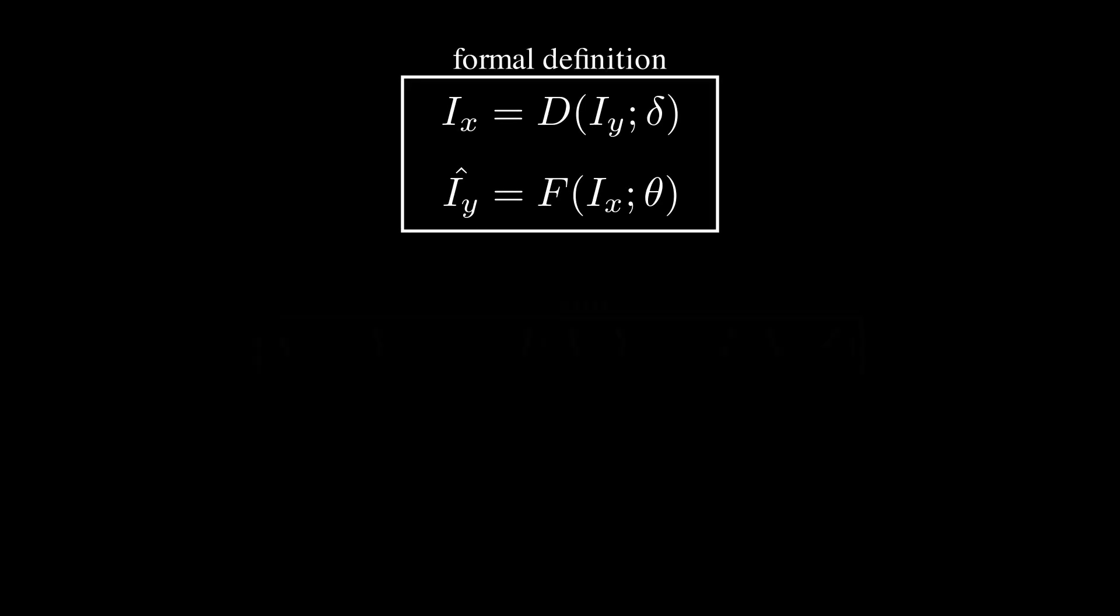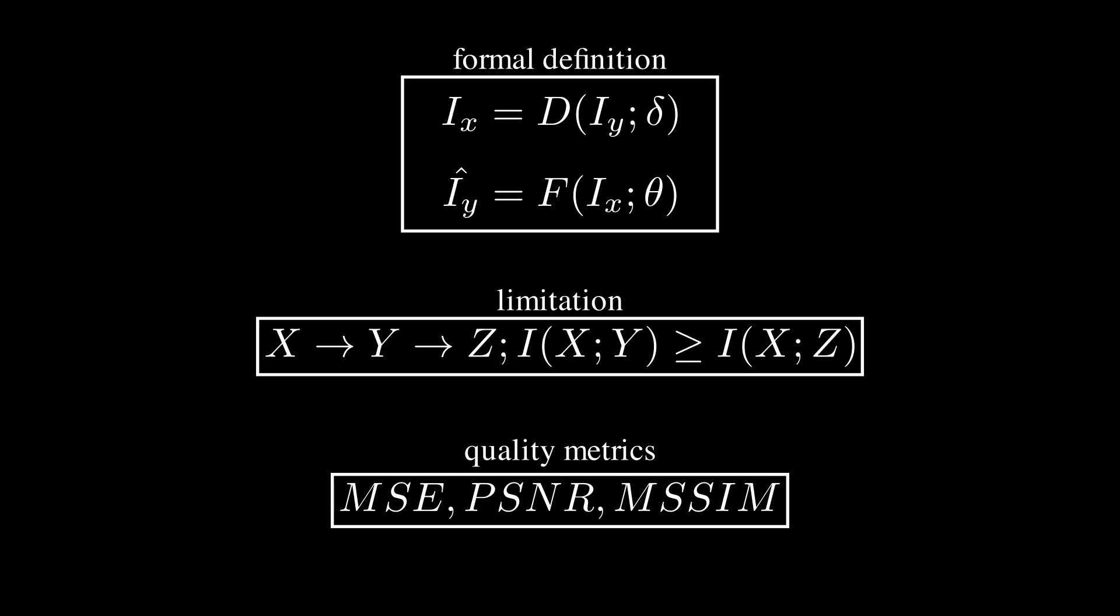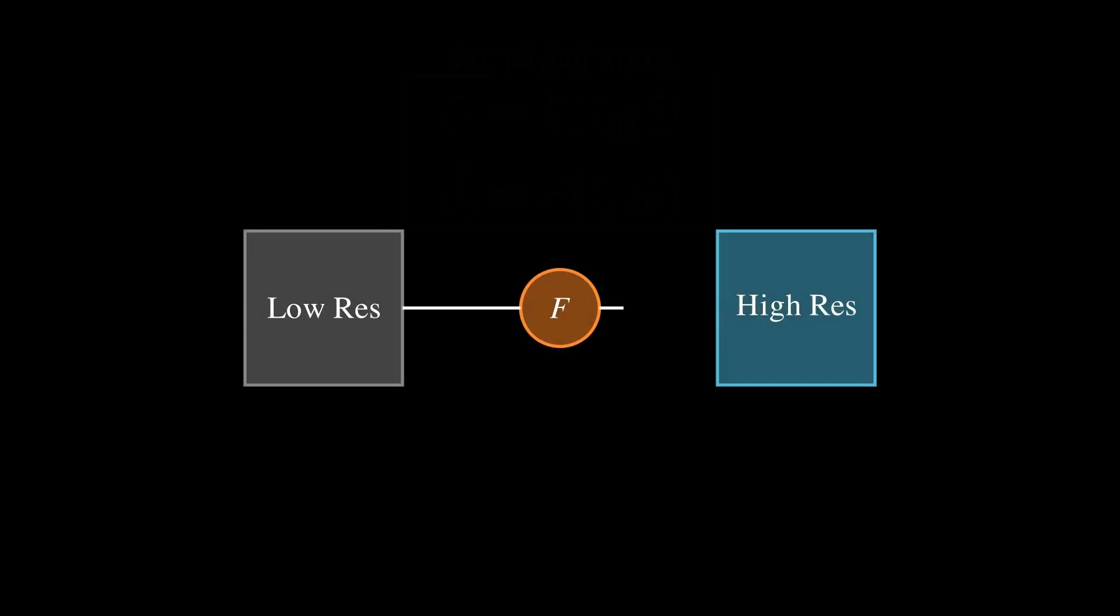That was a lot of stuff, so let's take a quick step back and see what we've done. We started by defining the problem of super-resolution to be creating a model F to map a low-resolution input to a high-resolution regeneration, which attempts to undo the effects of the degradation function D. We then showed the limitations we faced due to information theory and the data processing inequality, resulting in the ill-posed nature of super-resolution and the question of how we measure our regeneration quality. Finally, we partially answered this question by discussing various metrics of objective image quality such as mean squared error, peak signal-to-noise ratio, and SSIM.